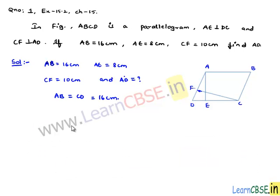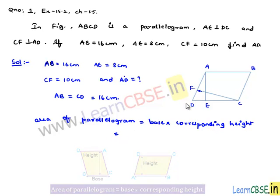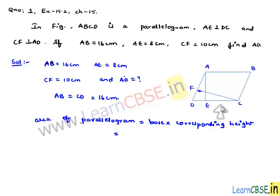Now, in order to find the value of AD let us follow a procedure. We know area of any parallelogram is equal to product of its base and corresponding height. Therefore, if we consider base as CD then the corresponding height will be AE, and if we consider base as AD then its corresponding height will be CF.